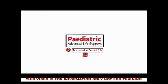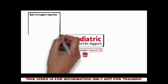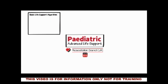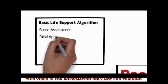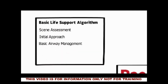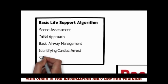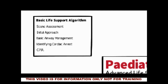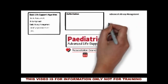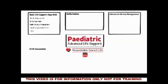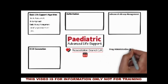We will build on the paediatric BLS algorithm — scene assessment, initial approach, basic airway management, identifying cardiac arrest and CPR — and examine the extra components of ALS. Main categories are defibrillation, advanced airway management, IV or IO cannulation, and drug administration and timings.